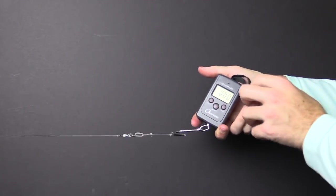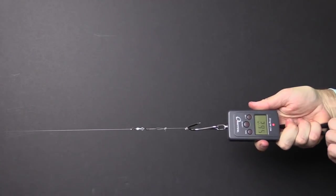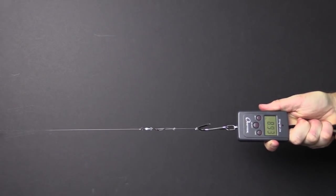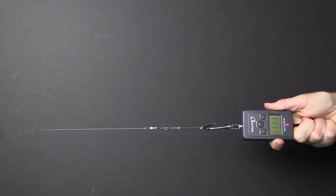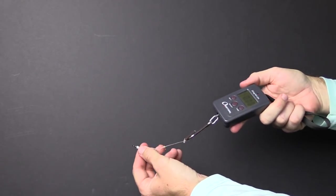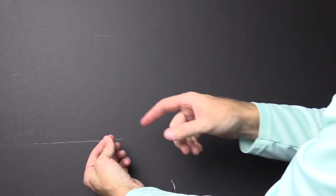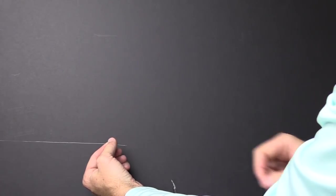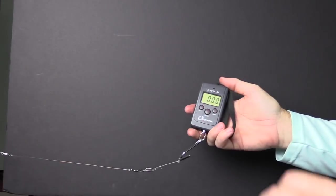Scale is zeroed out. Let's go - now we're at 7, 8, 9, 10, 11, 12 - that was 13 pounds and the uni knot failed again. So for fluorocarbon line, it looks like the clinch knot is the winner.